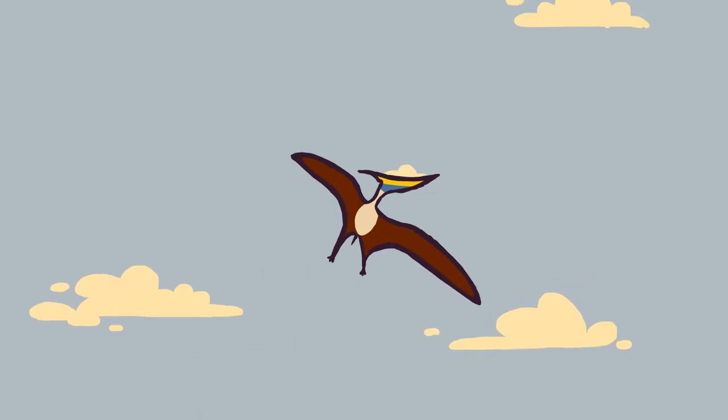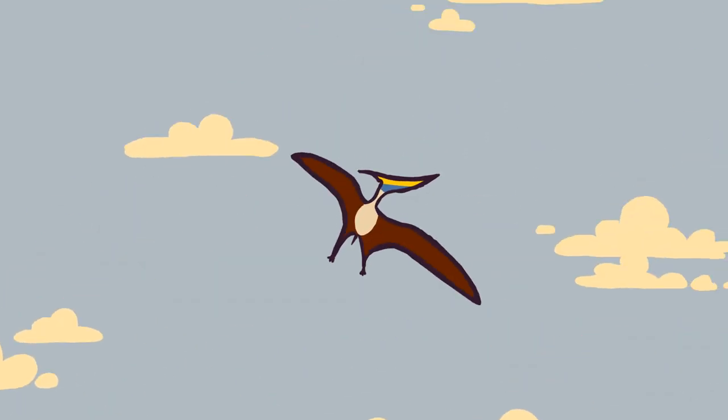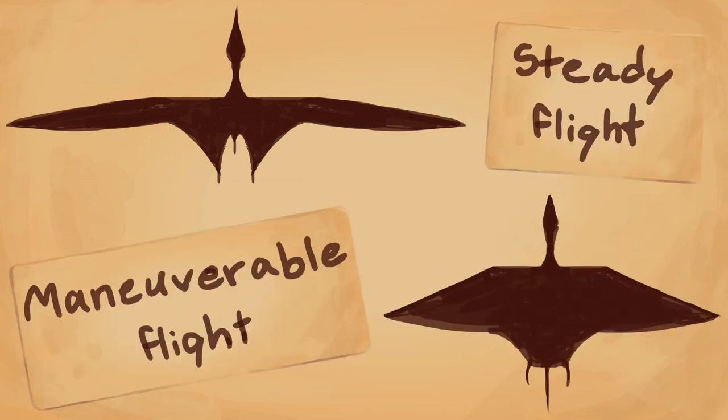As the pterosaur flies, notice how it switches between flapping and gliding? Most of them do, but it could vary. Those with slender wings have steadier flight, while those with broader wings are more maneuverable.